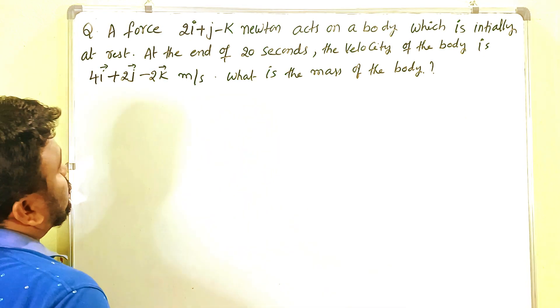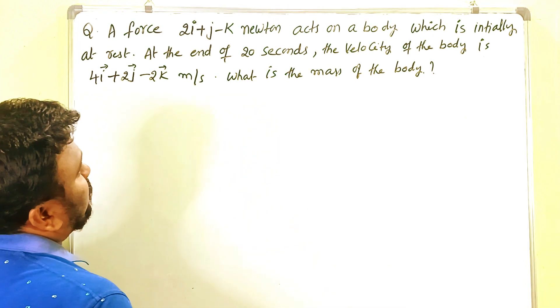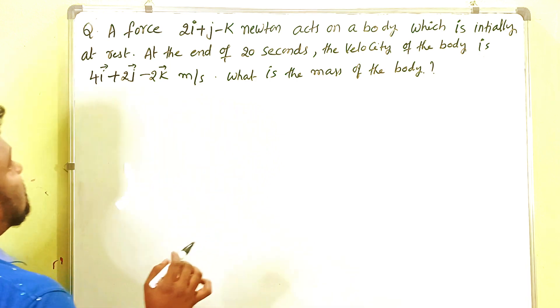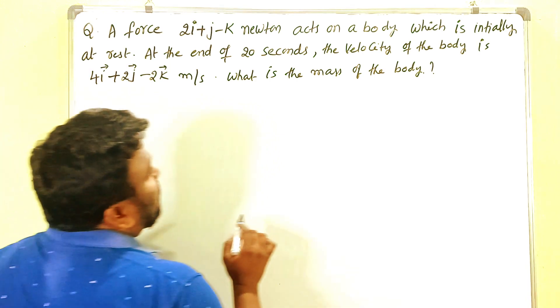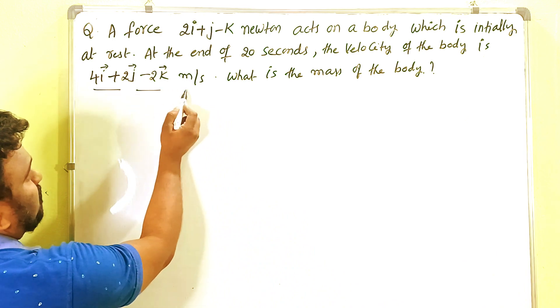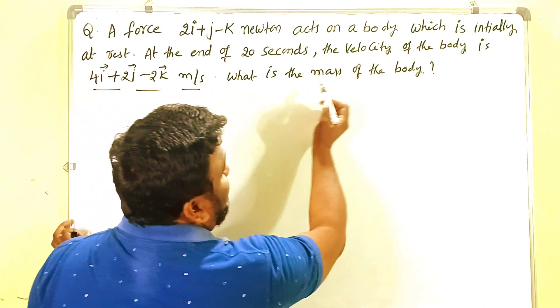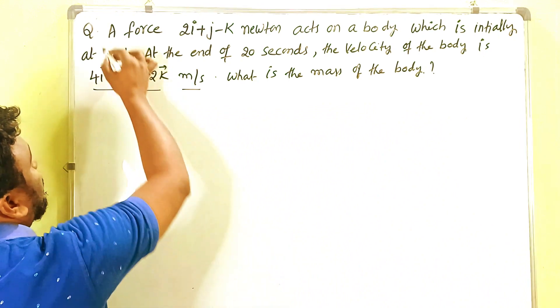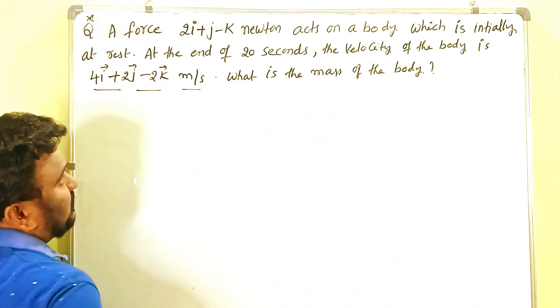Look here. A force 2i plus j minus k newtons acts on a body which is initially at rest. At the end of 20 seconds, the velocity of the body is 4i plus 2j minus 2k meters per second. What is the mass of the body? This is an important problem from the chapter of motion.